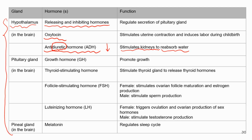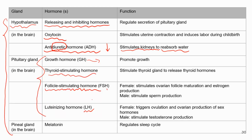Moving on to the pituitary gland — it secretes quite a few hormones, but we'll focus on the four most important ones mentioned in the TEAS study manuals. First is growth hormone, which is critical for body growth. Next is thyroid-stimulating hormone, which promotes the thyroid gland to release thyroid hormones. Then there's follicle-stimulating hormone (FSH) and luteinizing hormone (LH), which we covered in the reproductive system.